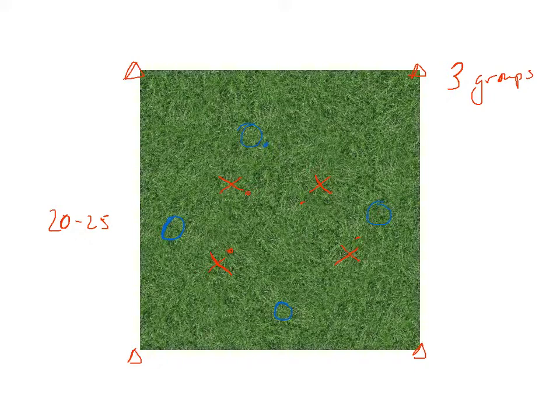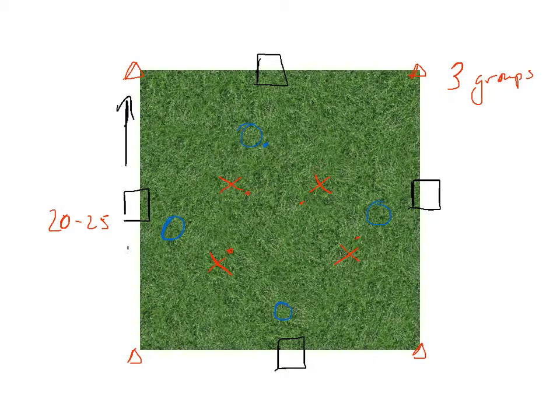And then the third group, and I'll make those black, they're going to be squares, and they're going to be on the outside of the square in between the cones. And they have one ball.